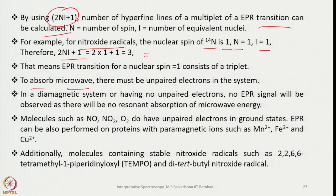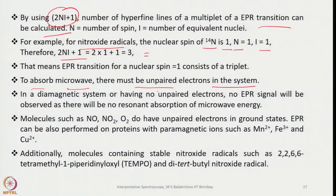To observe microwave absorption there must be unpaired electrons in the system — only when we have an unpaired electron or a radical species can we subject it to EPR study. In a diamagnetic system having no unpaired electrons, no EPR signals will be observed as there will be no resonant absorption of microwave energy. Therefore EPR cannot be used for diamagnetic species.